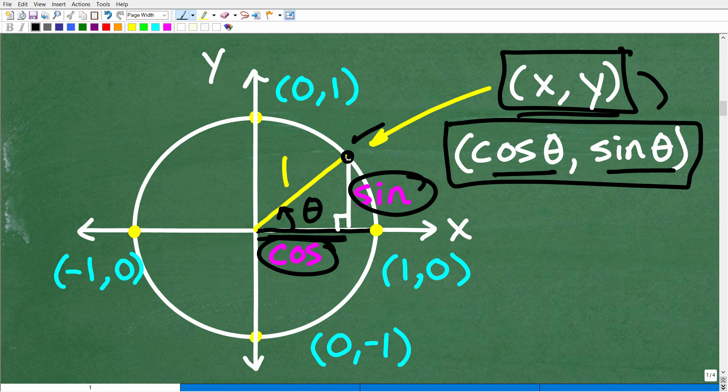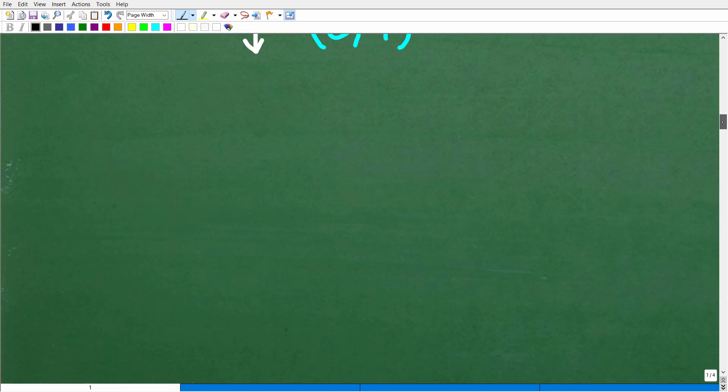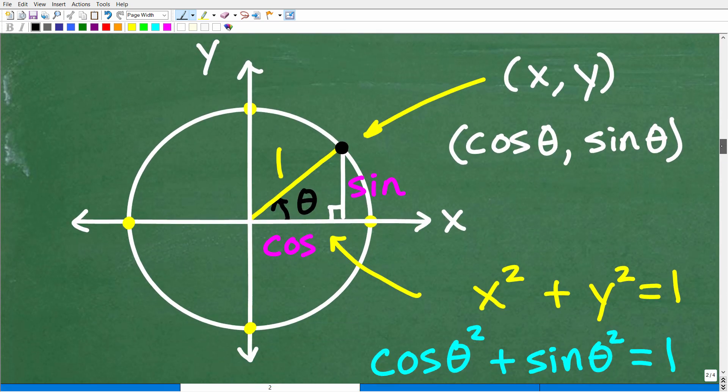You can go from rectangular coordinates to these coordinates, and you will have to. But we're just kind of building out the basics of the unit circle. So we talked about initial side, terminal side, and standard position. Now, let's go ahead and talk about something very cool here, which is the Pythagorean Theorem.